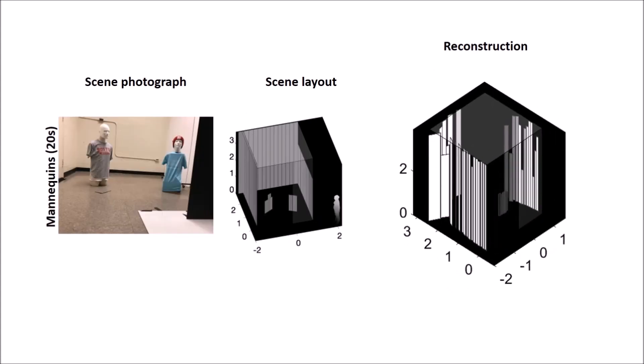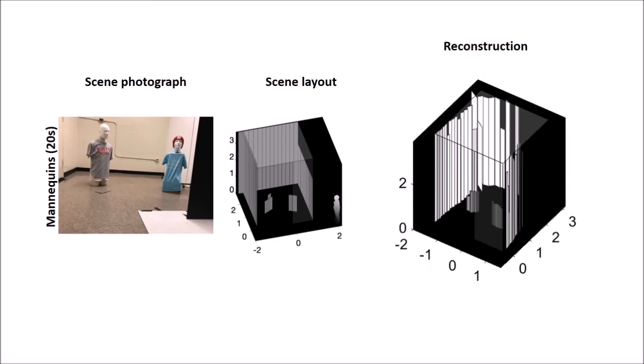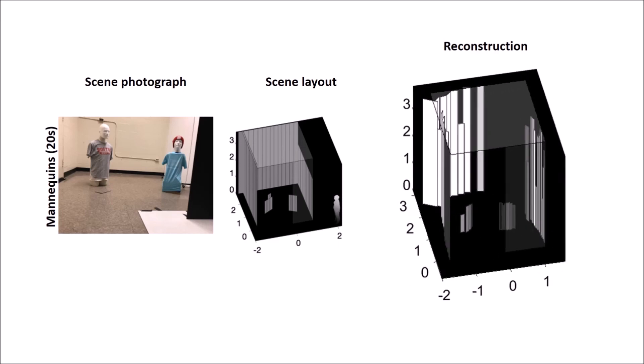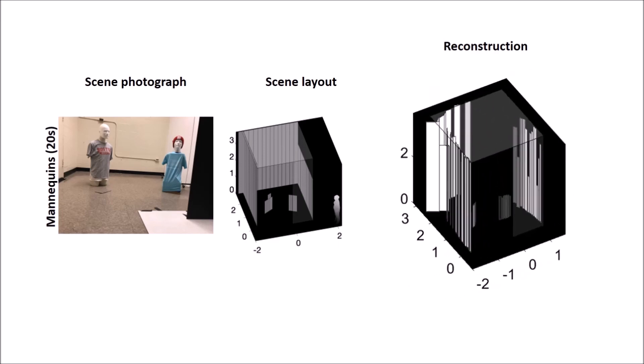Here we show a reconstruction of a room containing two mannequins. We find the positions of the mannequins with high accuracy as well as their heights. Some of the back wall is difficult to estimate as much of it is occluded from the point of view of the corner by the mannequins.